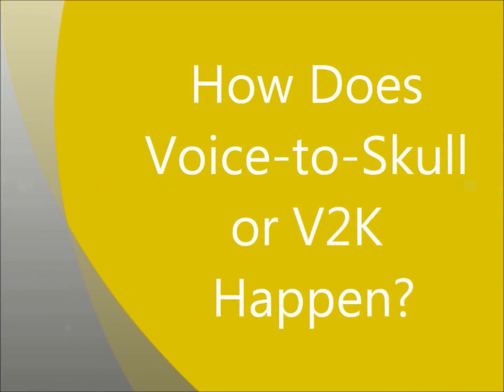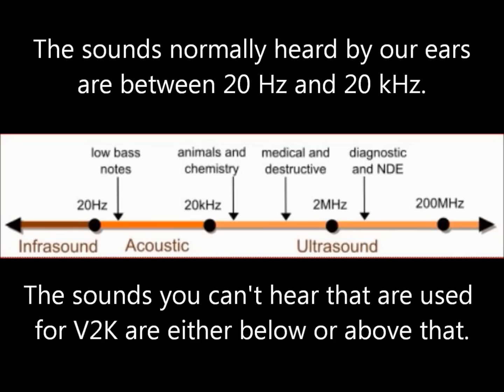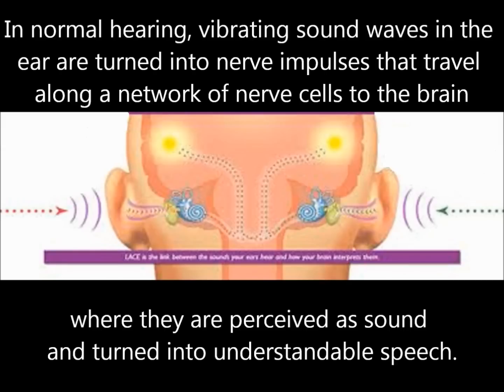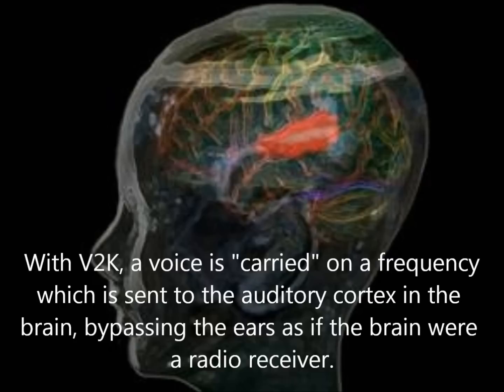How does Voice to Skull or V2K happen? The sounds normally heard by our ears are between 20 Hz and 20 kHz. The sounds used for V2K are either below or above that range. In normal hearing, vibrating sound waves in the ear are turned into nerve impulses that travel along a network of nerve cells to the brain, where they are perceived as sound and turned into understandable speech. With V2K, a voice is carried on a frequency which is sent to the auditory cortex in the brain, bypassing the ears as if the brain were a radio receiver.